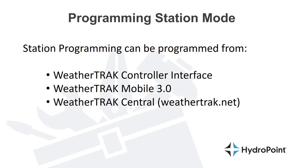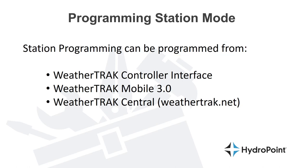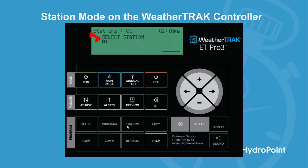With WeatherTrack, you can program the station mode in any one of our three interfaces — specifically the WeatherTrack interface, WeatherTrack Mobile 3.0, or WeatherTrack Central, or WeatherTrack.net. If you're standing at the controller, you can edit the station mode by going to the stations menu or hitting the stations button, first select the station that you want to edit, and then hit the forward arrow.